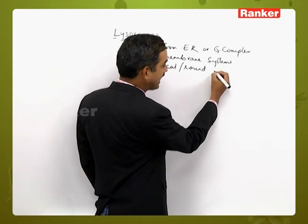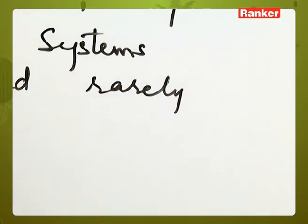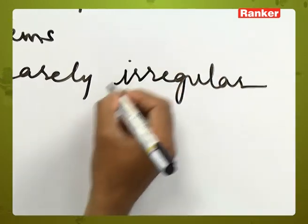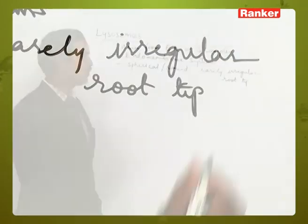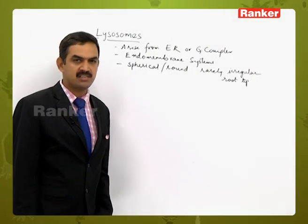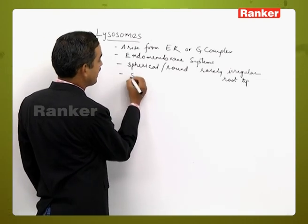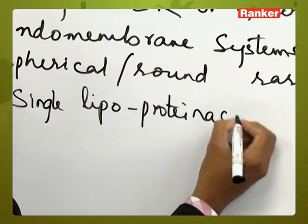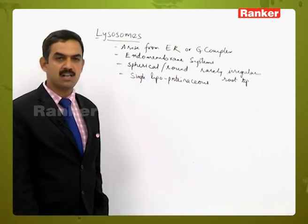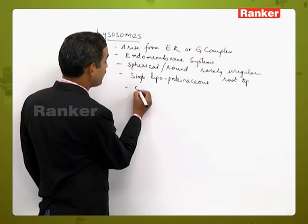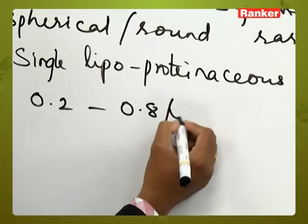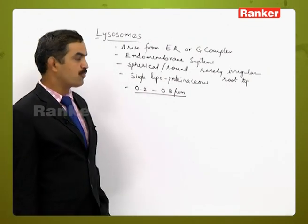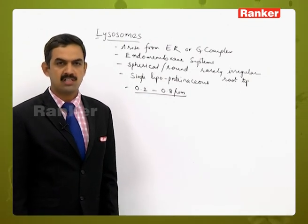Sometimes, rarely — such as in the root hairs or root tip cells of plants — lysosomes can be irregular in shape. These are structures made up of a single lipoproteinaceous membranous structure, meaning they are surrounded by a single membrane of lipoproteins, ranging from 0.2 to 0.8 micrometers in diameter. These lysosomes arise from the maturation side of the Golgi complex.